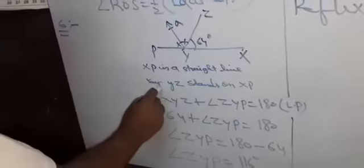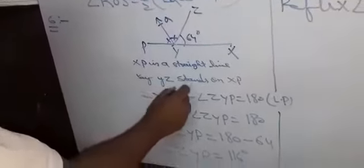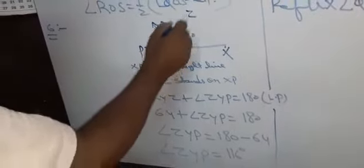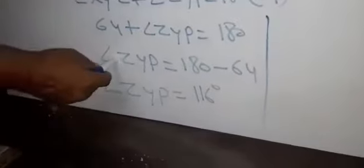XP is a straight line and ray YZ stands on XP. So angle XYZ plus angle ZYP is equal to 180 degrees, a linear pair. XYZ has value 64, so 64 plus angle ZYP equals 180. Therefore angle ZYP is equal to 180 minus 64, which gives angle ZYP equal to 116 degrees.